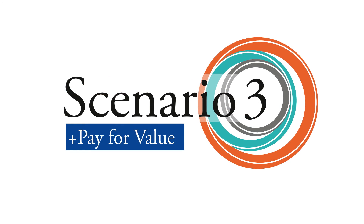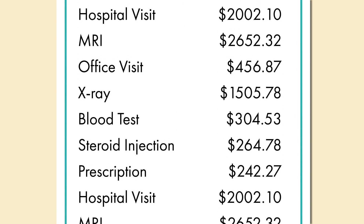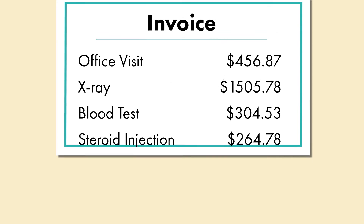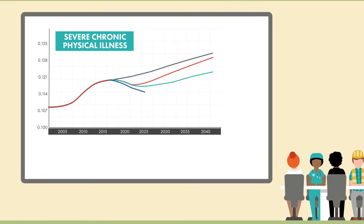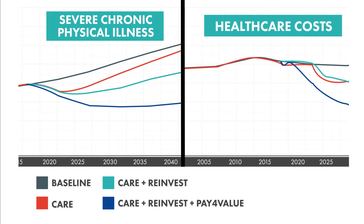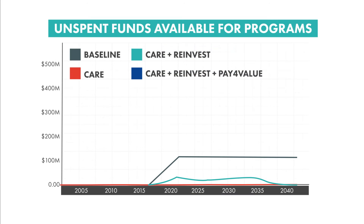Most health professionals are paid on a fee-for-service basis — the more they do, the more they get paid, whether or not it improves health. This rewards costly care and undercuts the potential of other reforms. What if, in addition to the other elements, we pay based on the value of services for each person instead of sheer volume? This is similar to new payment plans becoming the norm in some regions. There are positive impacts across all major measures, with even lower levels of disease and a dramatically faster decline in health care costs. The third lesson is that greater improvement is possible when innovations align with basic economic incentives. This combination is so effective that it also generates a growing stream of unspent funds, even after covering the full program price tag.